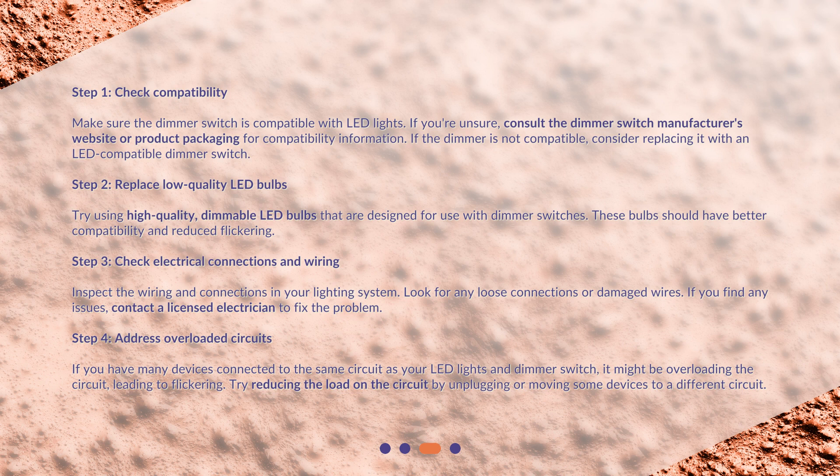Step 4: Address overloaded circuits. If you have many devices connected to the same circuit as your LED lights and dimmer switch, it might be overloading the circuit, leading to flickering. Try reducing the load on the circuit by unplugging or moving some devices to a different circuit.